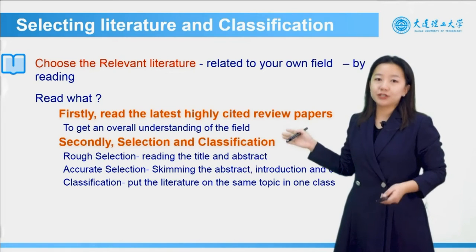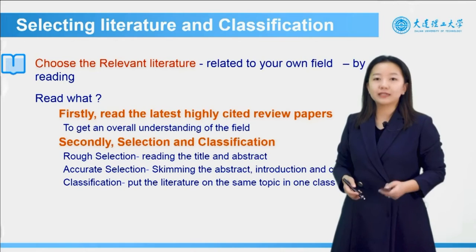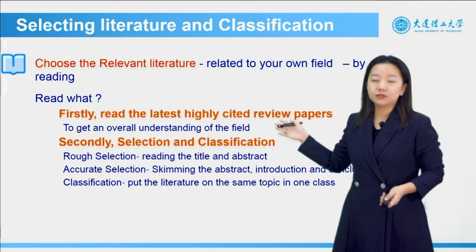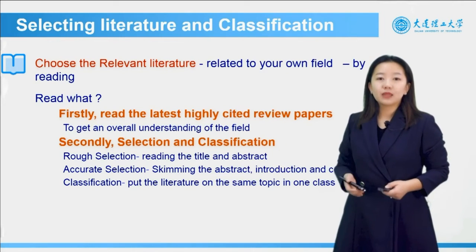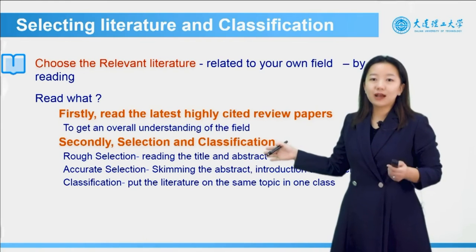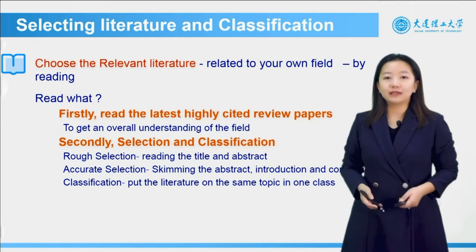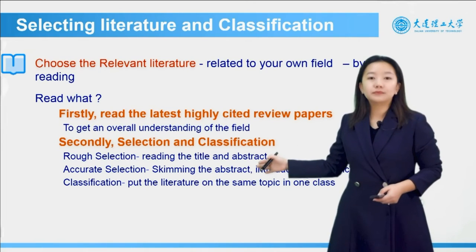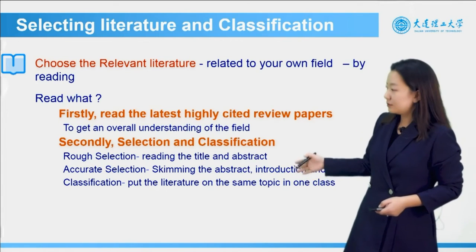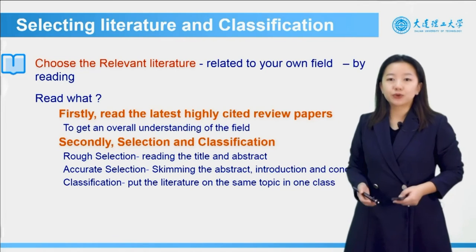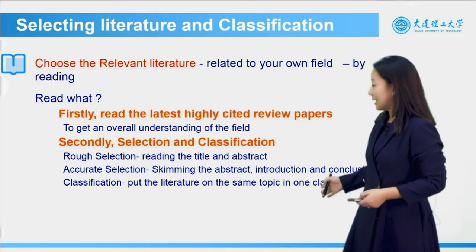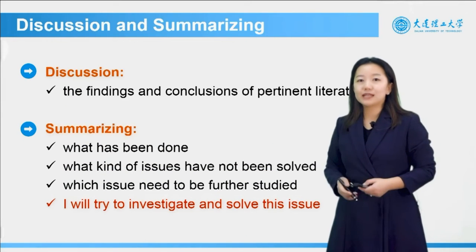Two suggestions: first, read the latest highly cited review papers to get an overall understanding of the field. Second, for selection and classification, there are three stages — rough selection by reading the title and abstract, accurate selection by skimming the abstract, introduction, and conclusion, and then classification: putting literature on the same topic into one class.